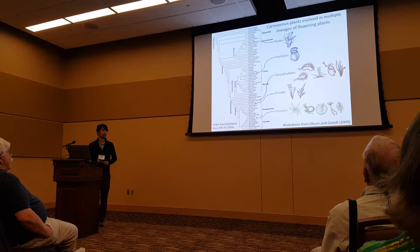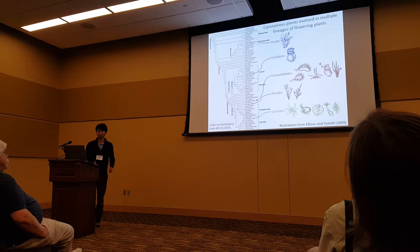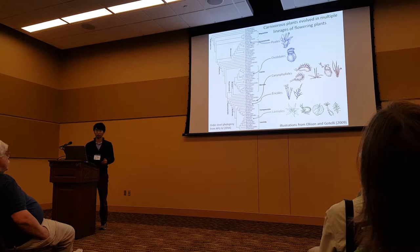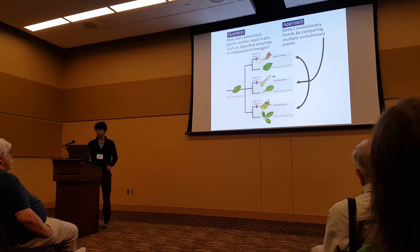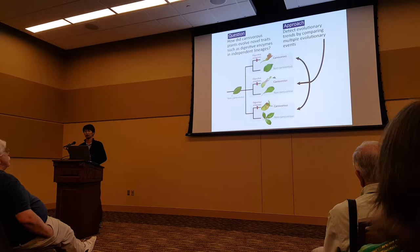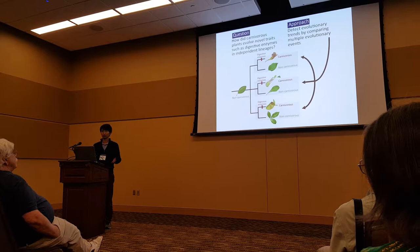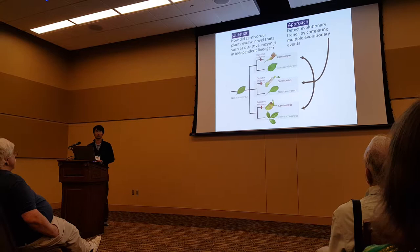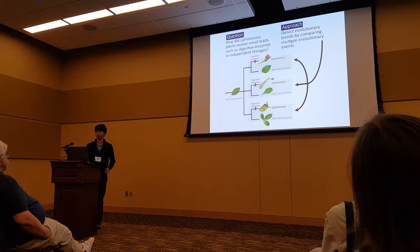As a couple of earlier speakers mentioned, carnivorous plants evolved many times in flowering plants. In total, five orders contain at least one species of carnivorous plants. We started our research with this question: how did carnivorous plants evolve novel traits such as digestive enzymes in independent lineages? Our approach was to detect evolutionary trends by comparing multiple instances of carnivorous plant evolution.